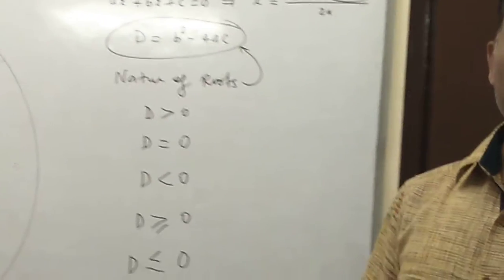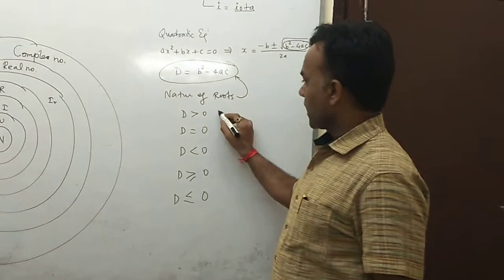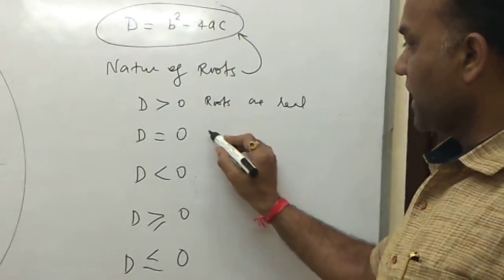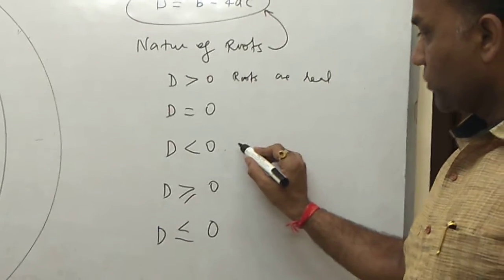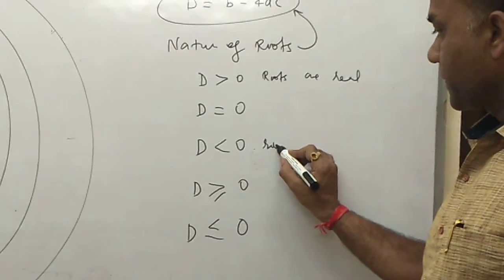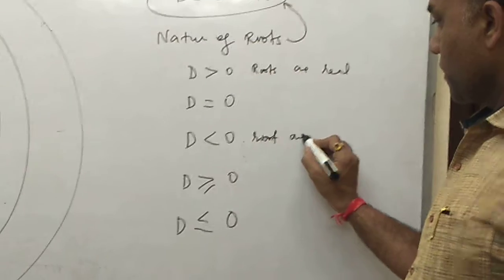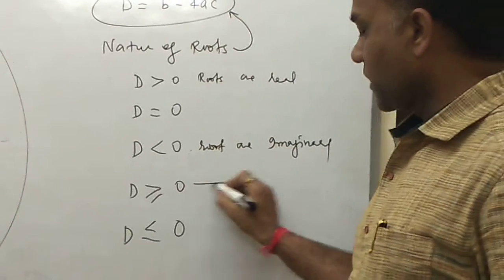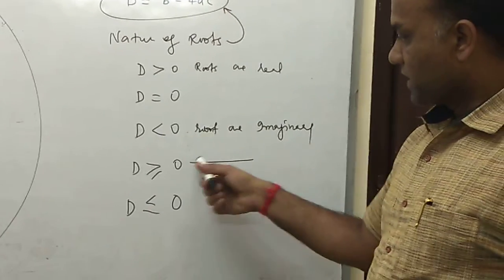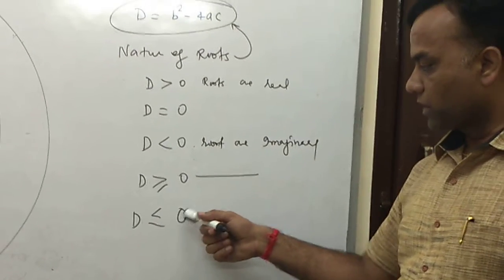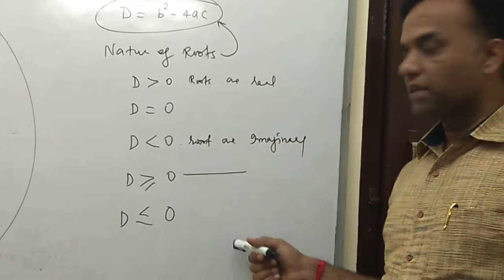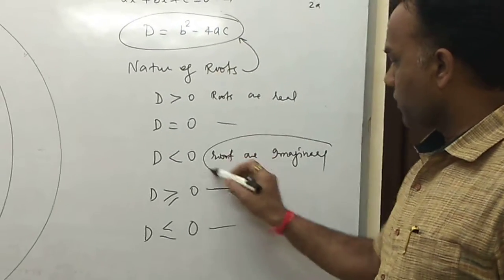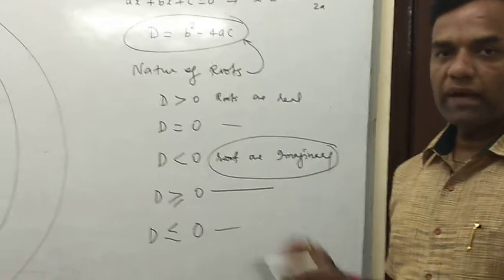These are the natures of quadratic equations. When D > 0, roots are real and distinct. When D = 0, roots are real and equal. When D < 0, roots are imaginary. So the condition for imaginary roots is D < 0.